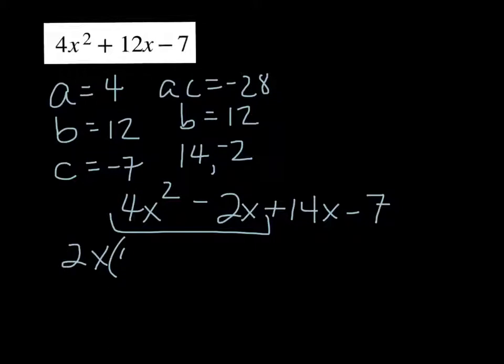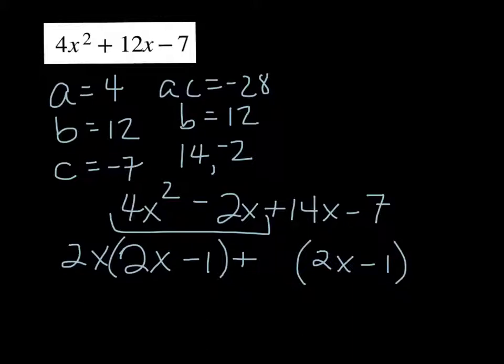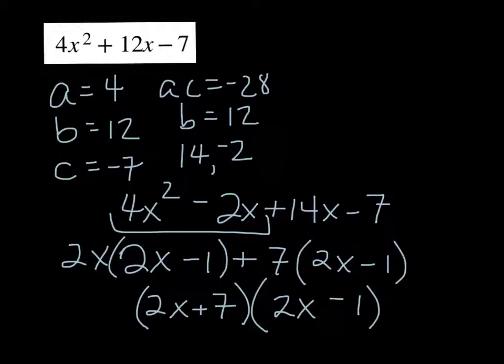So I have 4x² minus 2x plus 14x minus 7. Out of the first pair we factor a 2 and an x because 4 and 2 are both even, leaving 2x - 1. And we know that this ends up having to be 2x - 1. So what could we factor out of that? A 7. So (2x + 7) is being multiplied by (2x - 1). So that's how we factor an ax² + bx + c trinomial.